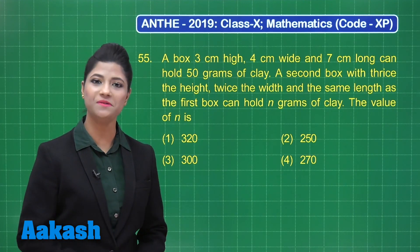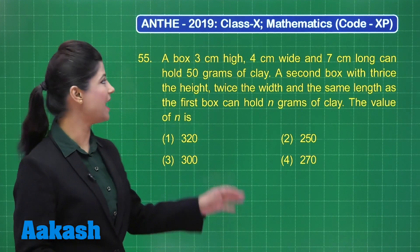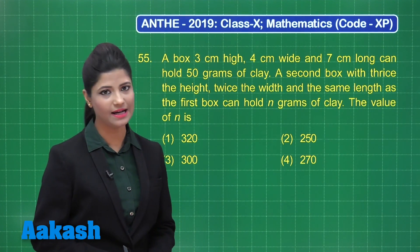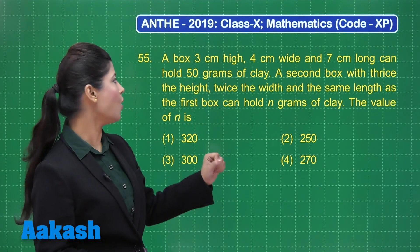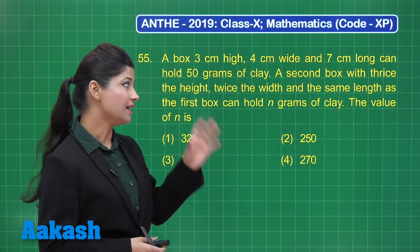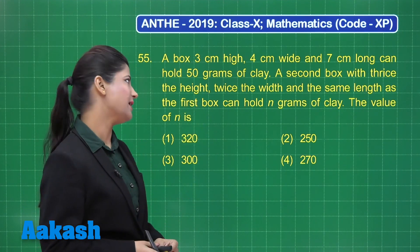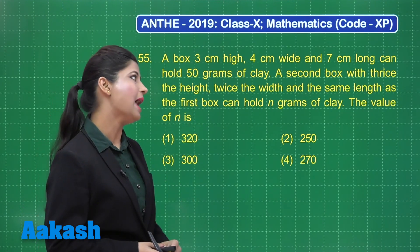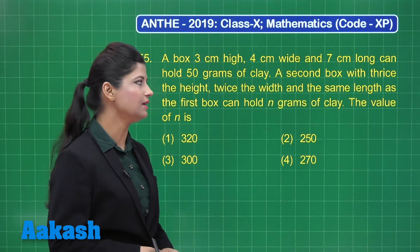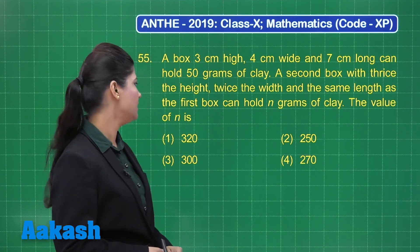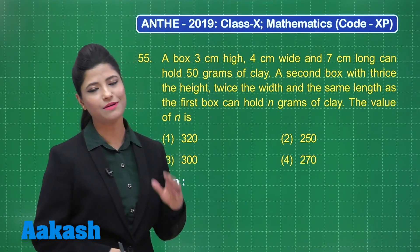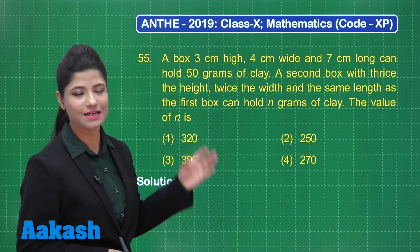Now let's discuss question number 55. It states that a box 3 cm high, 4 cm wide and 7 cm long can hold 50 grams of clay. A second box with thrice the height, twice the width and the same length as the first box can hold n grams of clay. The value of n is one of four options. Let's try to find the answer.